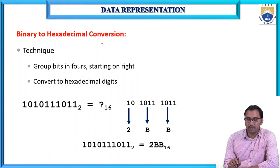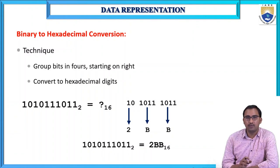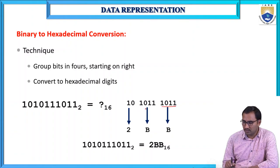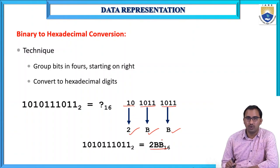For binary to hexadecimal conversion, group the bits in 4 starting from the right. For example: 1011 is equivalent to B, 1011 is again B, and 0010 is 2. So the hexadecimal equivalent is 2BB.